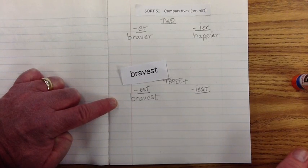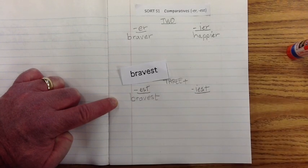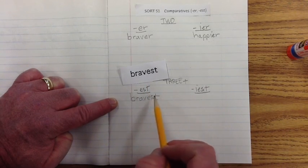And then we're going to drop the E and add E-S-T. Okay. And we might say that the lion is the bravest of them all. And of them all means that there are three or more things being compared. Okay. So, again, on this one we drop the E and add E-S-T.